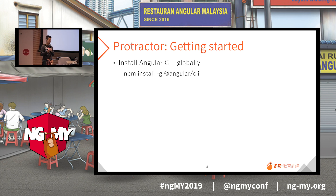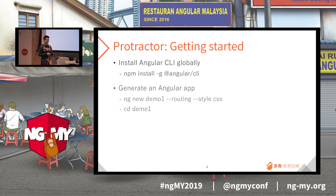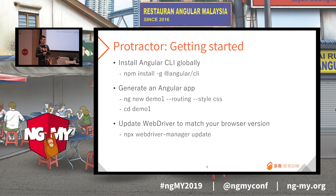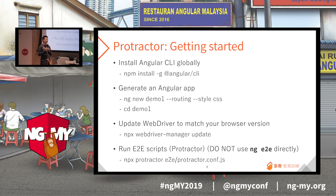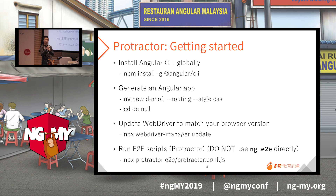If you've never used Protractor before, here's what you do. First, install Angular CLI globally. Then use the CLI to create a new project. The third step is update the WebDriver — that's a very important step. You run the WebDriver manager update, and that's it. The last step is run Protractor: you can run npx, Protractor, end-to-end, with the Protractor config JS file. Remember: do not use ngE2E to run Protractor, because it is very, very slow.